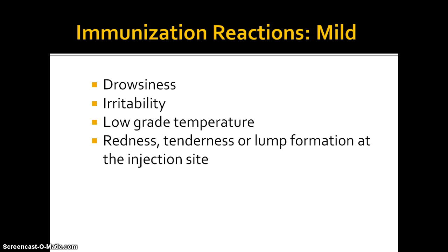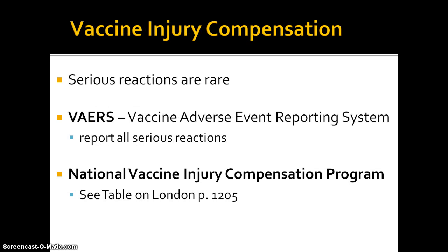This slide gives a list of common signs and symptoms of mild immunization reactions: drowsiness, irritability, low-grade temperature, redness or tenderness, or a lump formation at the site of the injection. These are common reactions. There also can be serious reactions, although they are quite rare, and there is a national vaccine injury compensation program. Part of this program is the Vaccine Adverse Events Reporting System, with forms posted on the CDC website. All serious reactions to vaccines should be reported through this system, and you can see the table of injury compensation guidelines on page 1205 in your London textbook.